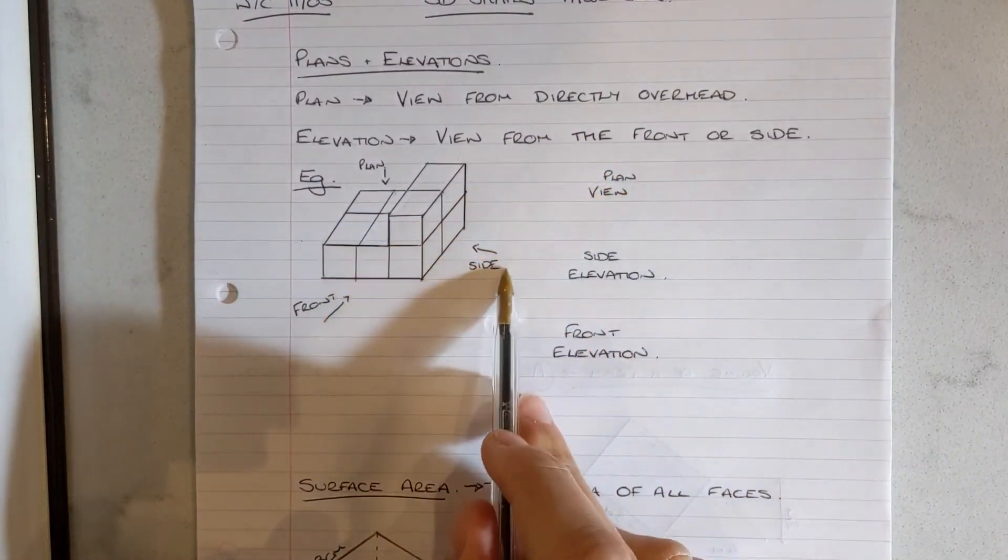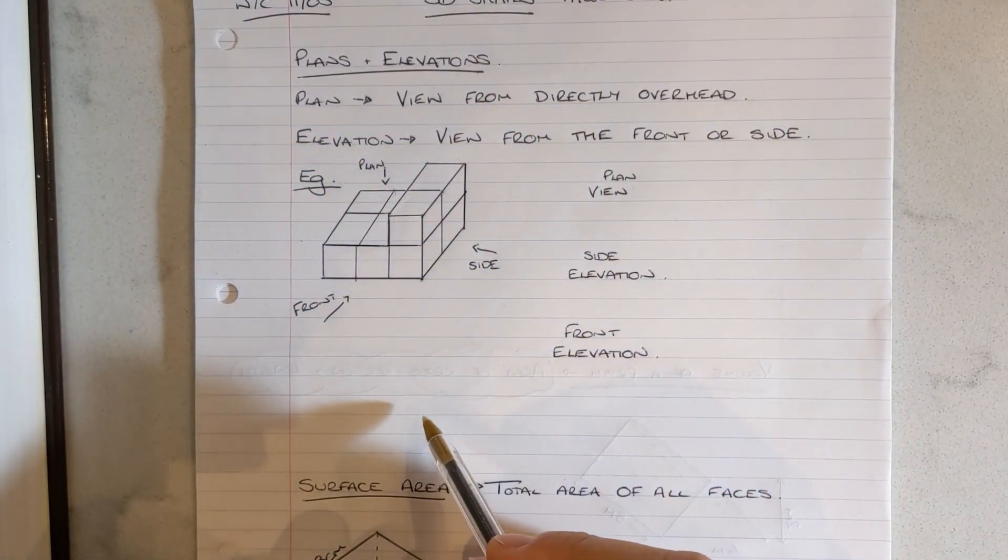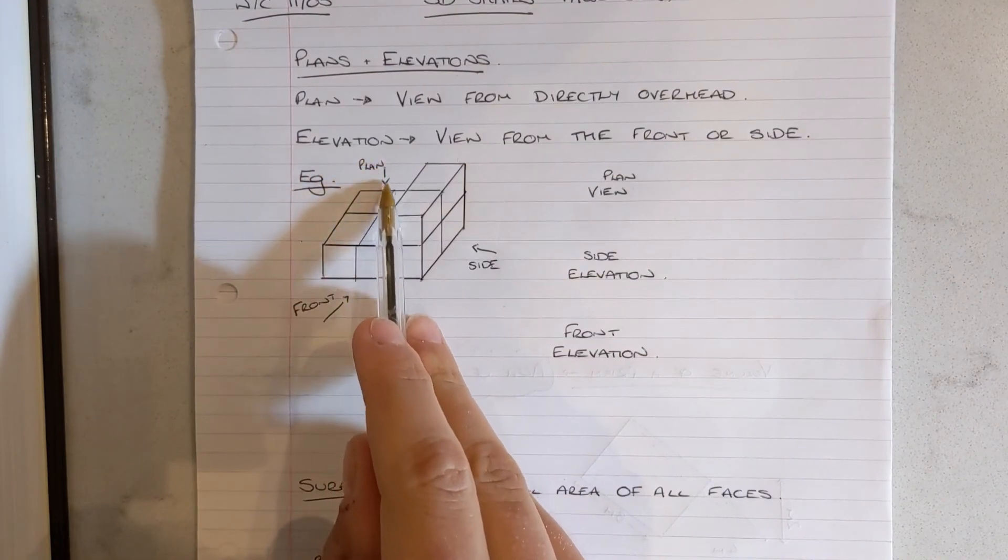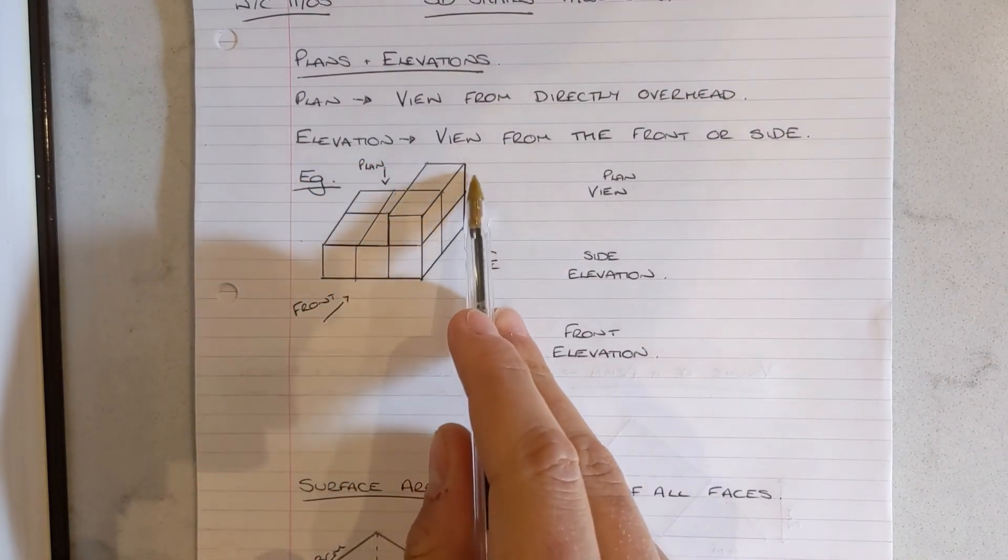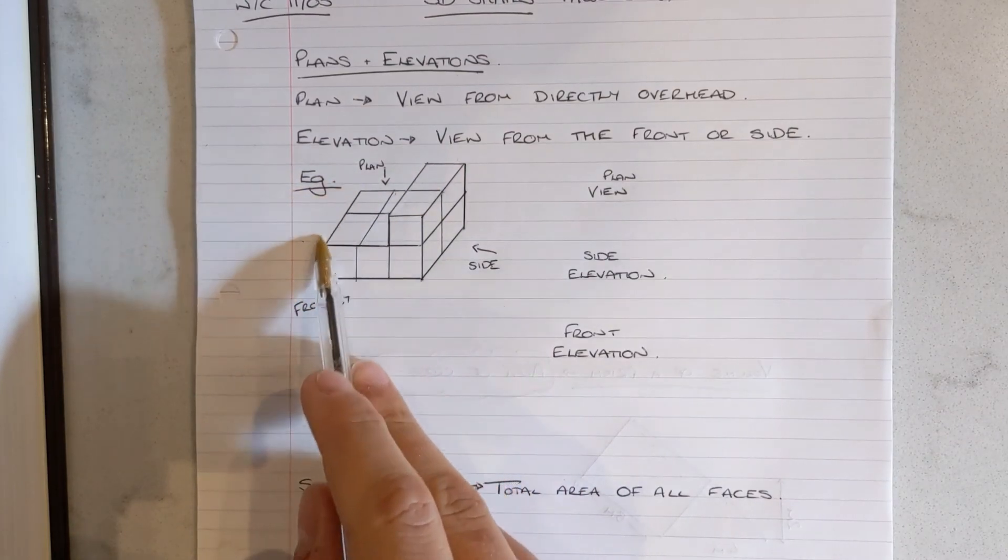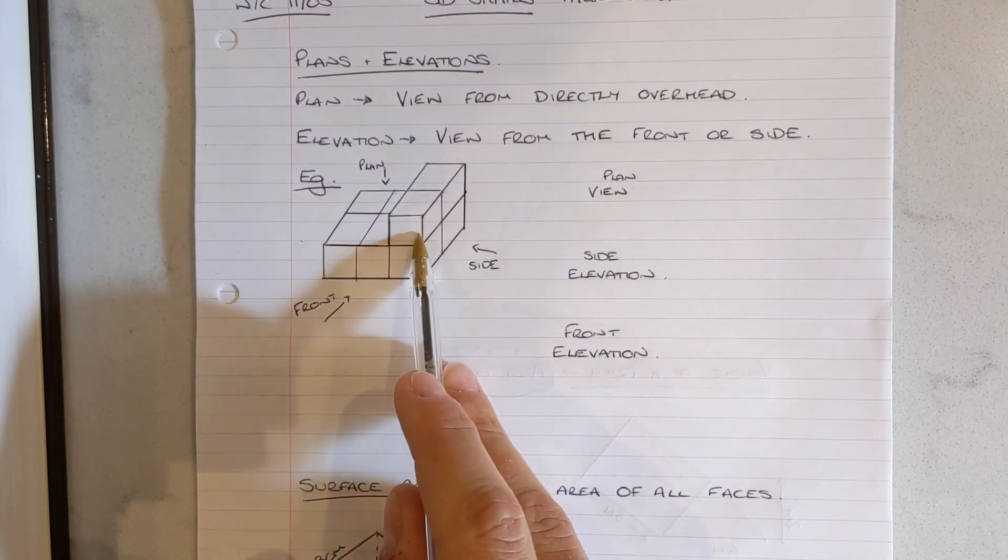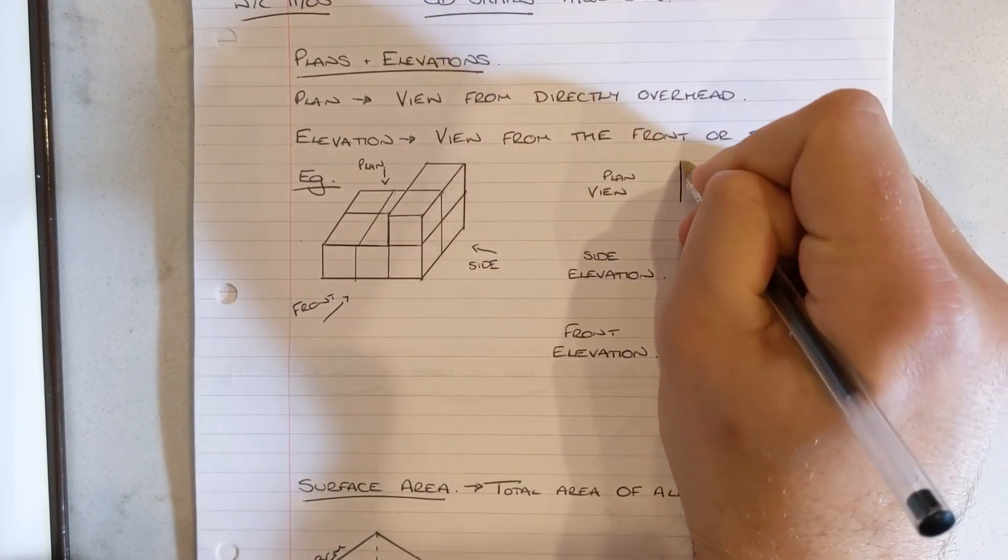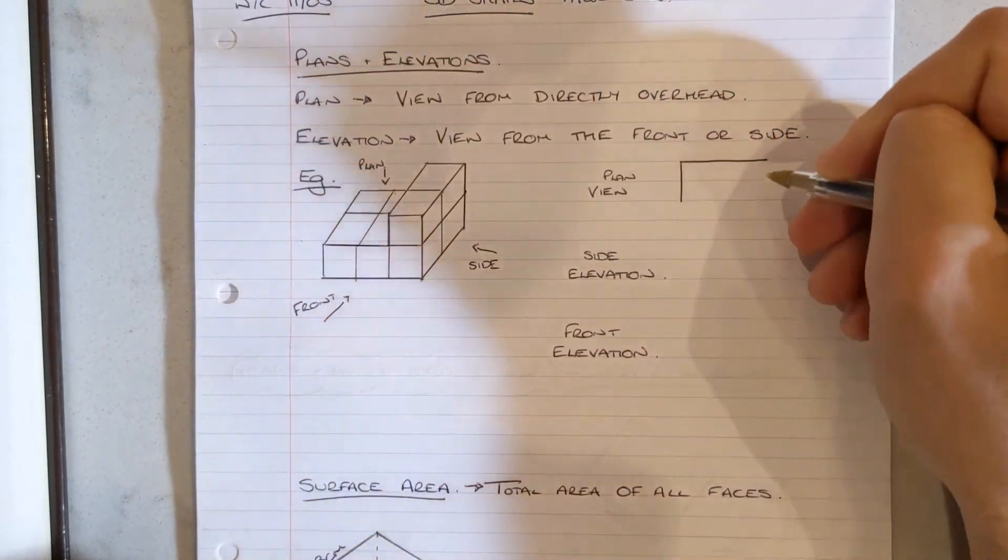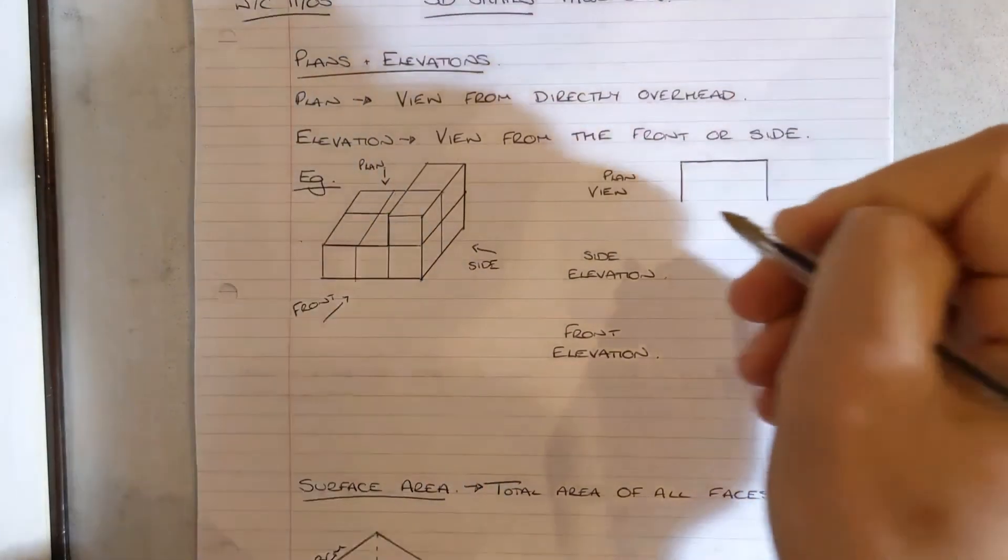So the plan view, like we said before, is directly overhead. If I was staring down at this shape from directly above, I would see a rectangle that is 2 wide and 3 long. So I would draw out this shape using a pencil and a ruler, unlike me. So it's 2 down and 3 wide.